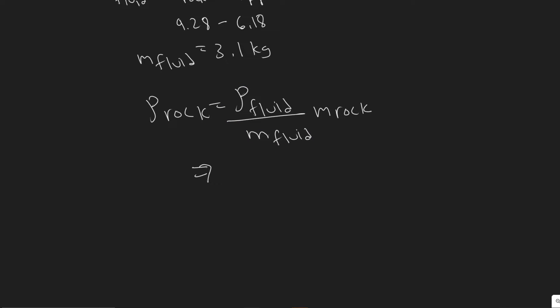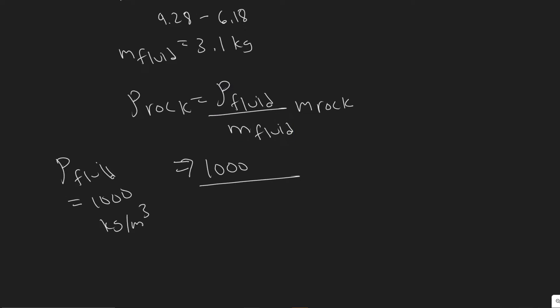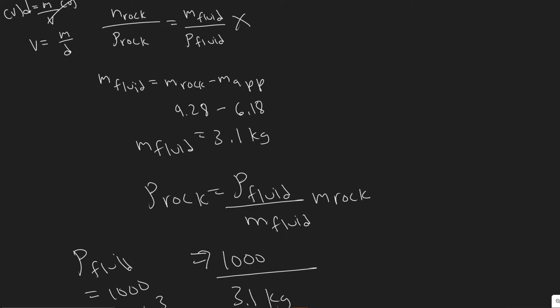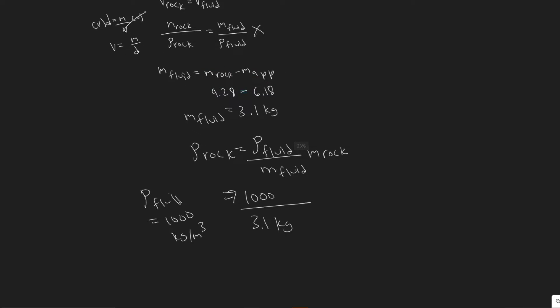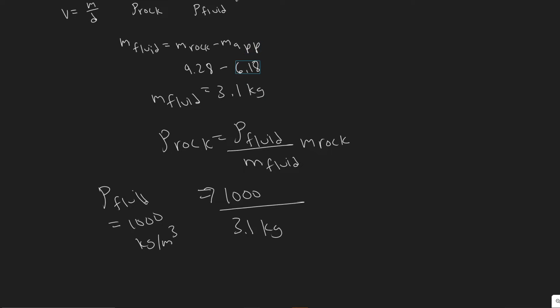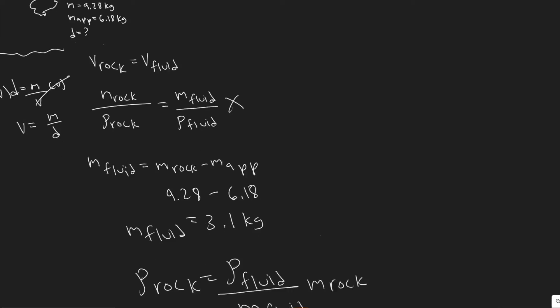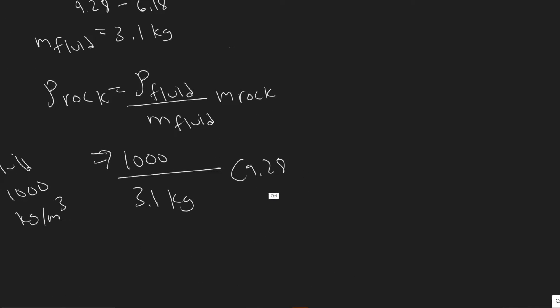The density of the fluid — in this case it's water — is 1,000 kilograms per meter cubed; you should just know that the density of water is 1,000 kilograms per meter cubed. Dividing by the mass of the fluid we just found, which is 3.1 kilograms — that's just the difference between the mass of the rock minus its apparent mass, since we're displacing the water. Then we multiply by the mass of the rock, the real mass, which was 9.28 kilograms. So you have 1,000 divided by 3.1 times 9.28.